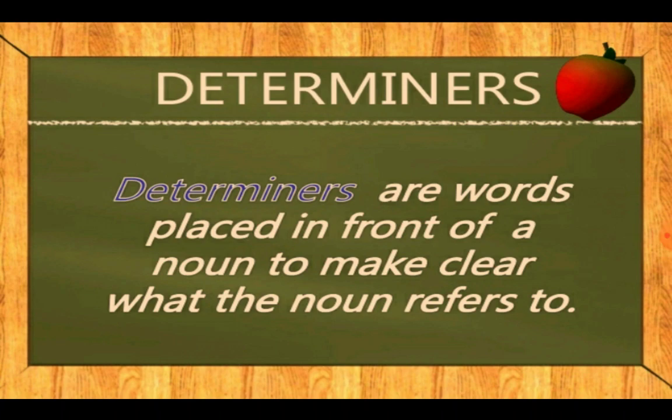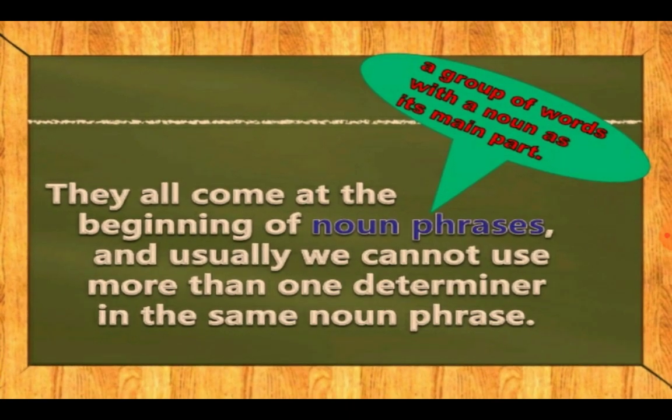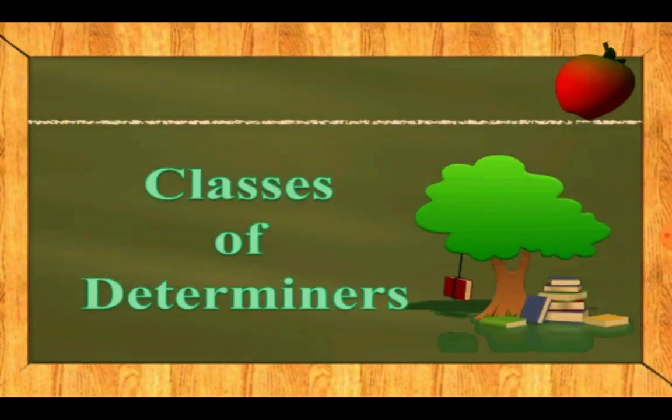About the definition: determiners are words placed in front of a noun to make clear what the noun refers to. In simple language, determiners are words which show the exact position, exact condition, and give us information about the noun. They come at the beginning of noun phrases, and usually we cannot use more than one determiner in the same noun phrase.